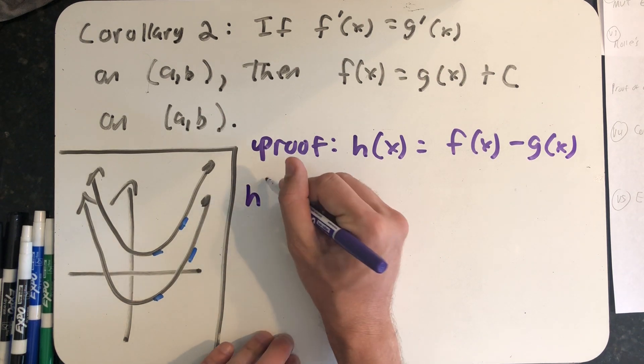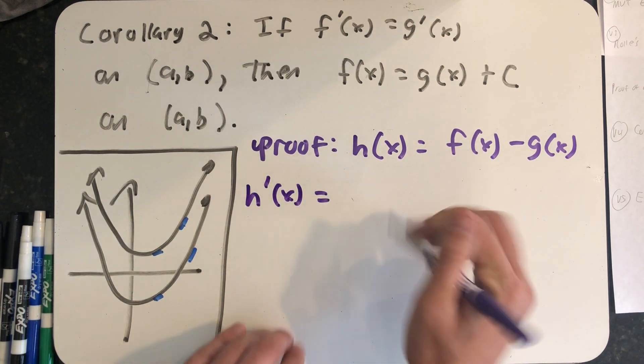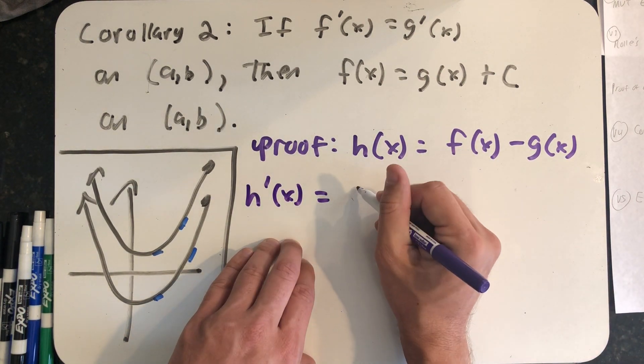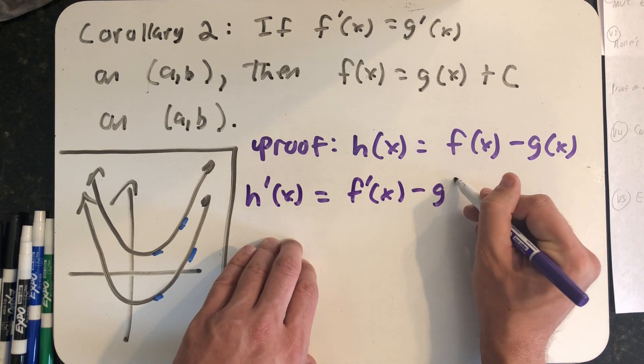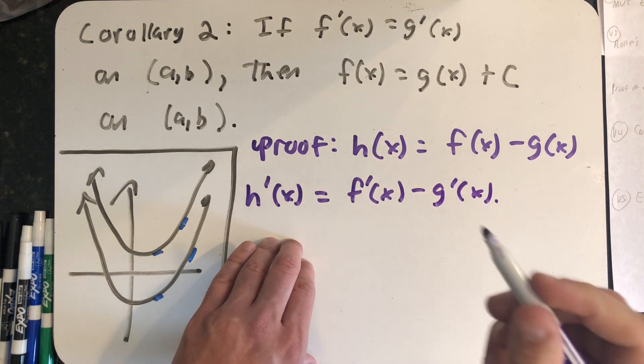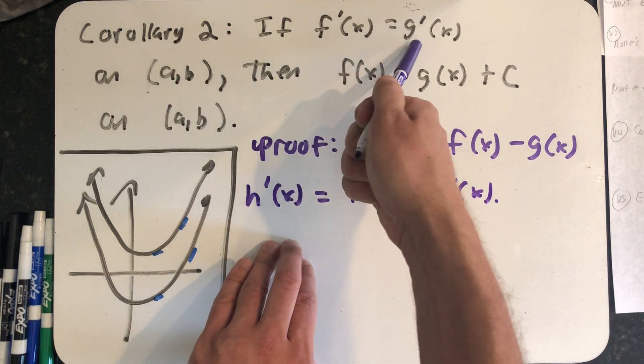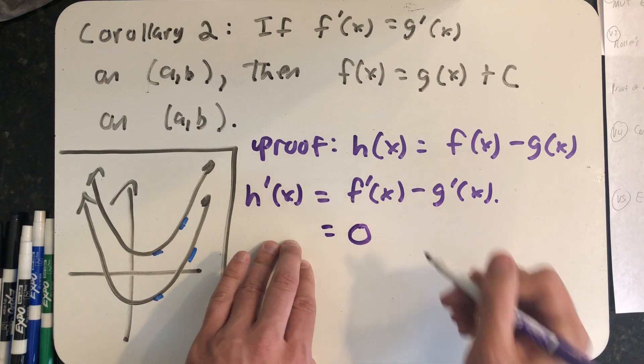So let's take the derivative of our new function. The sum rule for the derivative says that h prime would be f prime minus g prime. Under the hypotheses here, f prime is equal to g prime, so this is really zero.